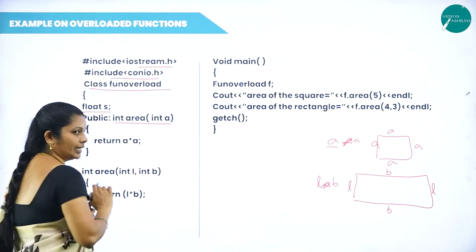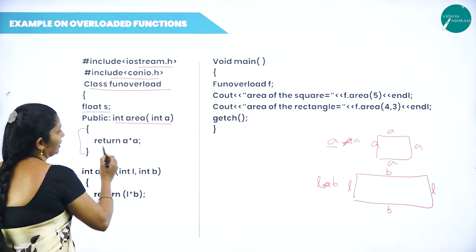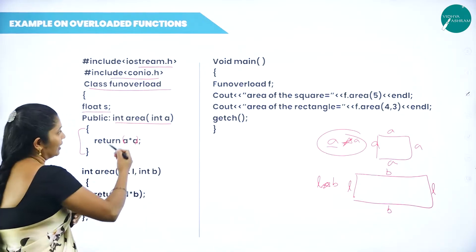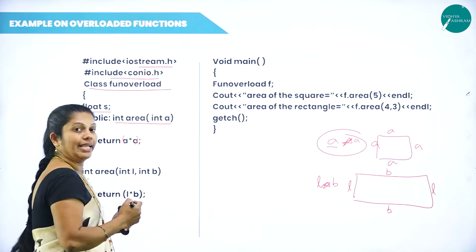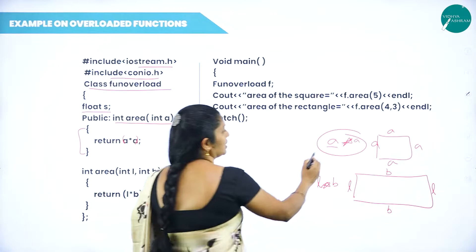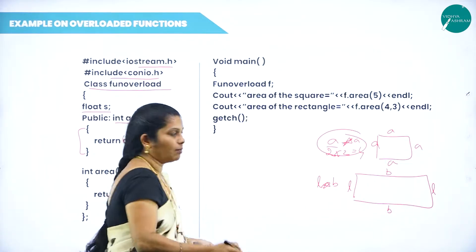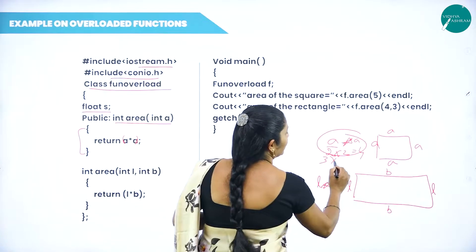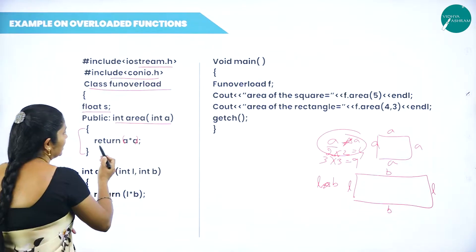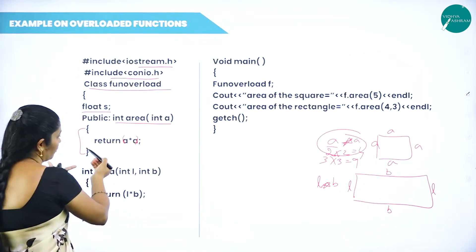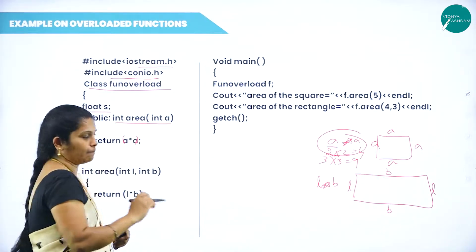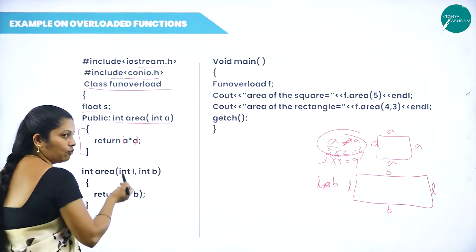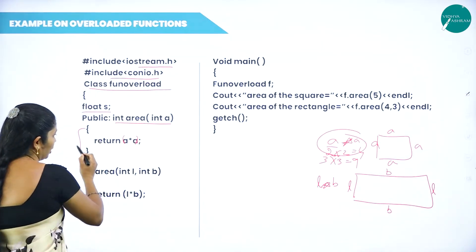The first function is: int area(int a) — the return type is integer, meaning after calculation the result is generated in integer format. The calculation is: return a * a. If I give 2, the result is 4; if I give 3, the result is 9. The function name is area, with one integer argument. We open the function and close it.